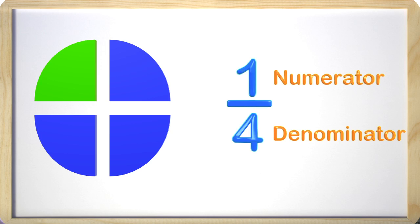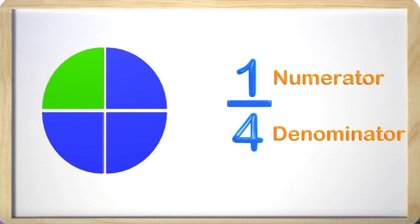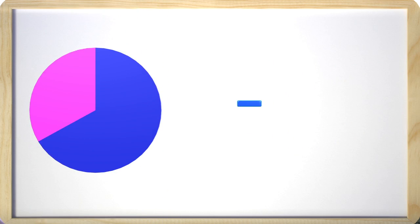So this fraction shows that one of the four parts is green. Now that we have refreshed our minds, let's look at fractions and equations.